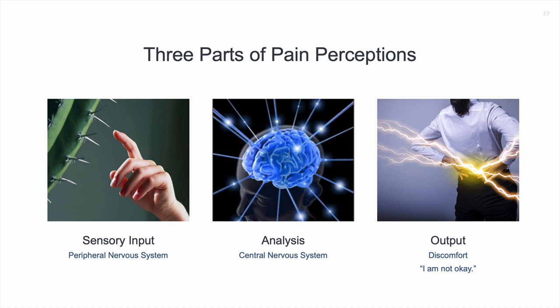There are three parts of pain perception. Number one: sensory input from our peripheral nervous system. Number two: analysis — what the brain is trying to figure out, asking 'what's going on?' And number three: output. If the brain concludes there's a threat, there's going to be discomfort, and a message: 'I am not okay.' Let's look at examples of how that works.